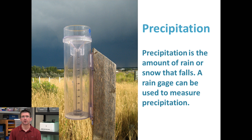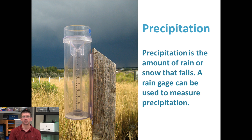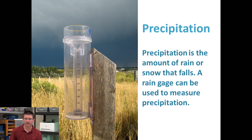Precipitation describes things like rainfall, snowfall — any type of water falling from the sky, like we talked about when we studied the water cycle. We can measure precipitation with a rain gauge, which just collects the rain and lets us see how much we actually receive.